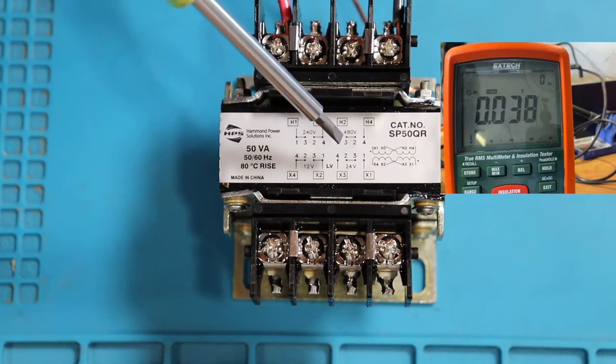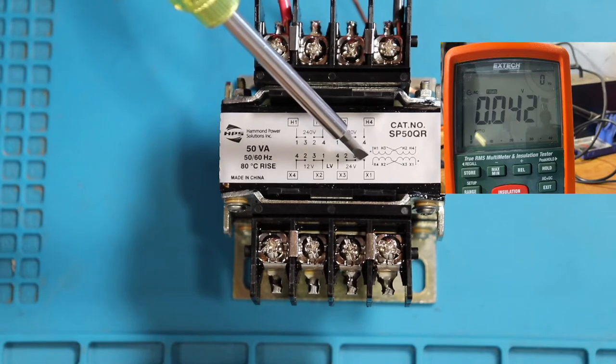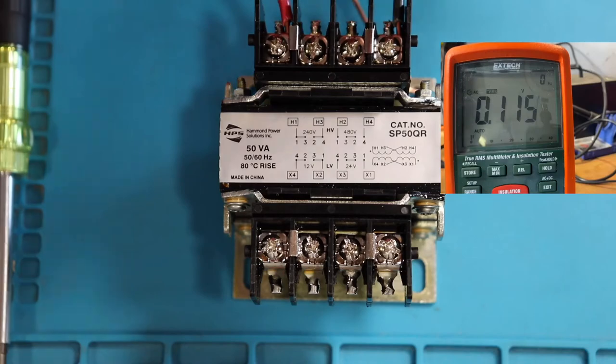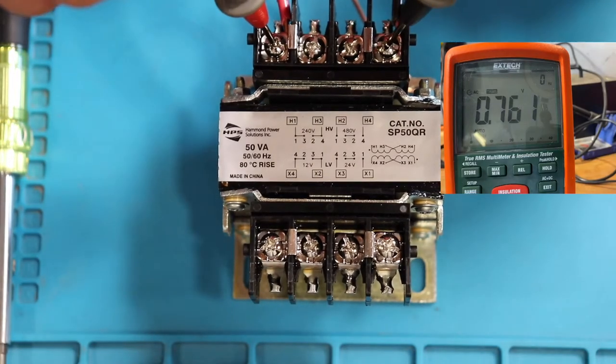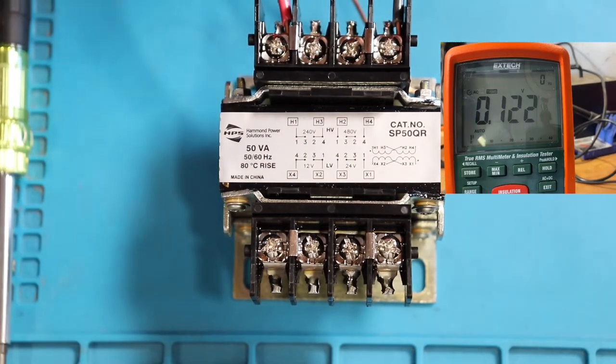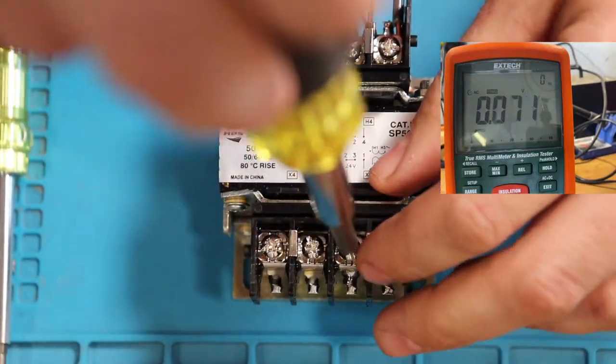Now we're going to change our taps on our secondary side so we can get 24 volts. Make sure you shut off your power before you do this. Before we do, we'll test that our power is off, which it is, and we'll change our taps.